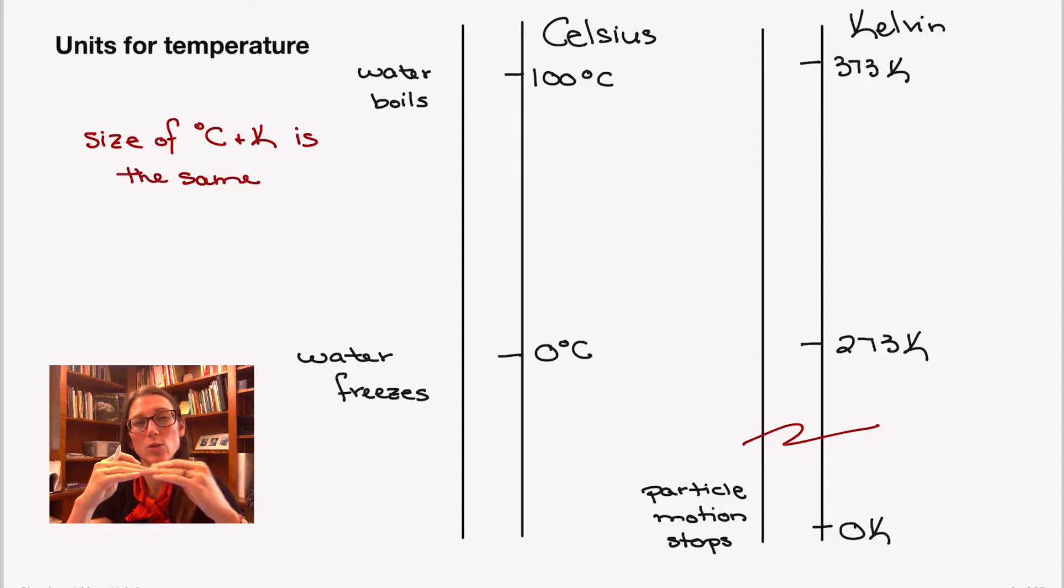And that means that you can't have less than no motion. There is never a negative Kelvin temperature because you can't go less than none. And since Kelvin's about motion, zero is as low as you go. And that has another name. It's called absolute zero.